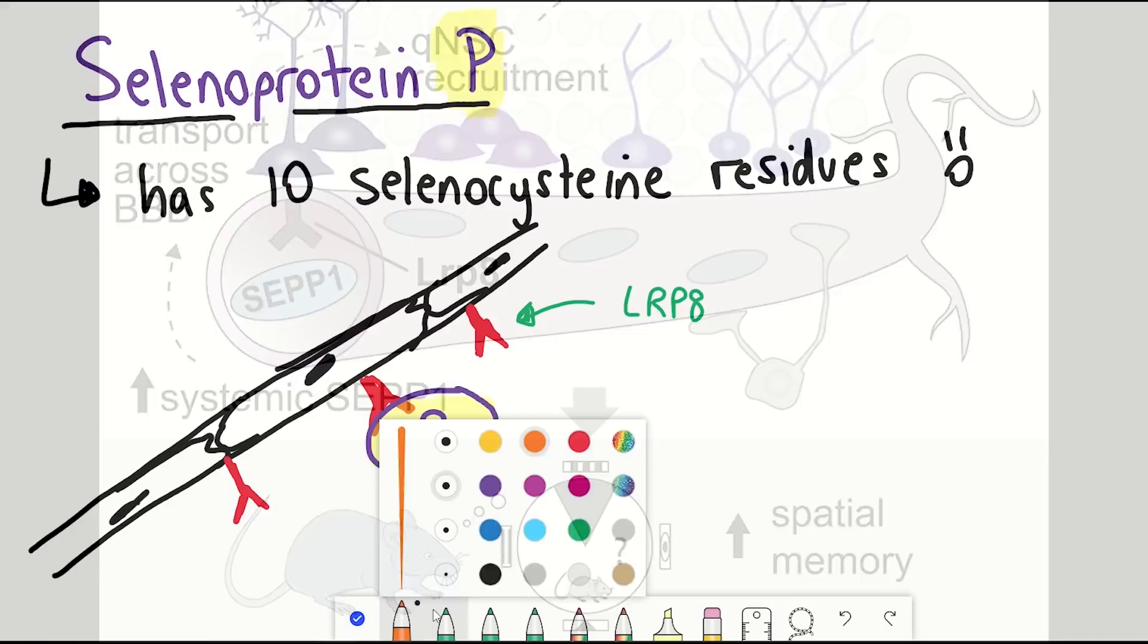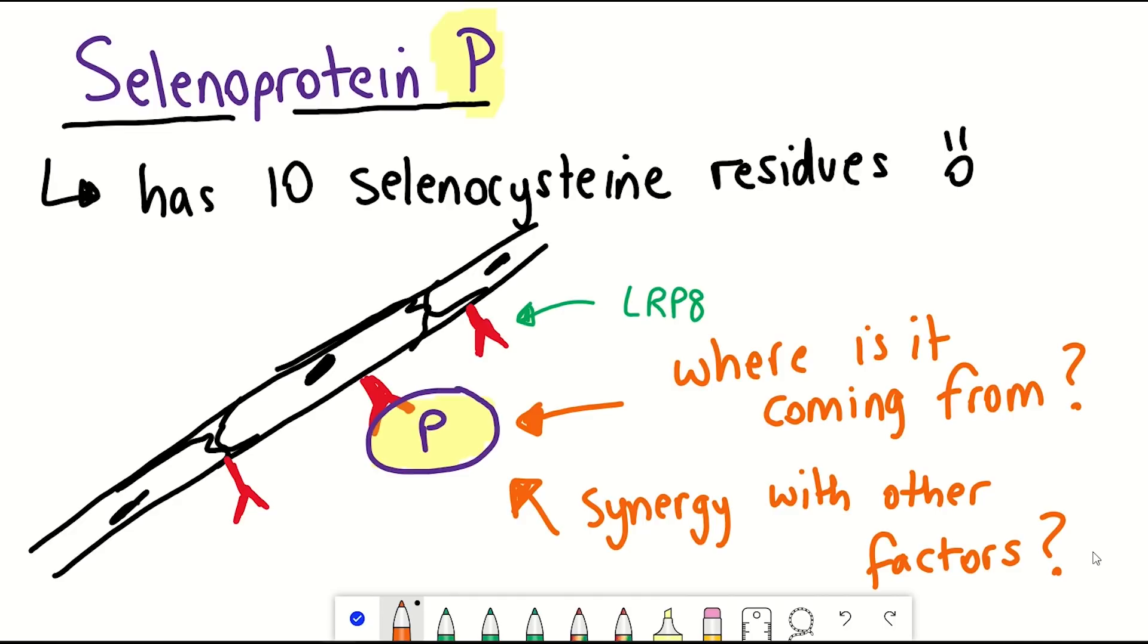There are clearly some questions that remain to be addressed. Where is the selenoprotein P coming from, for example? It's thought that this protein is mainly expressed in the liver, but it could in theory come from other cell types too. Selenoprotein P is also just one out of many factors that are upregulated during exercise, and others include cathepsin B, BDNF and FEJF. So do these factors synergise together to promote neurogenesis?